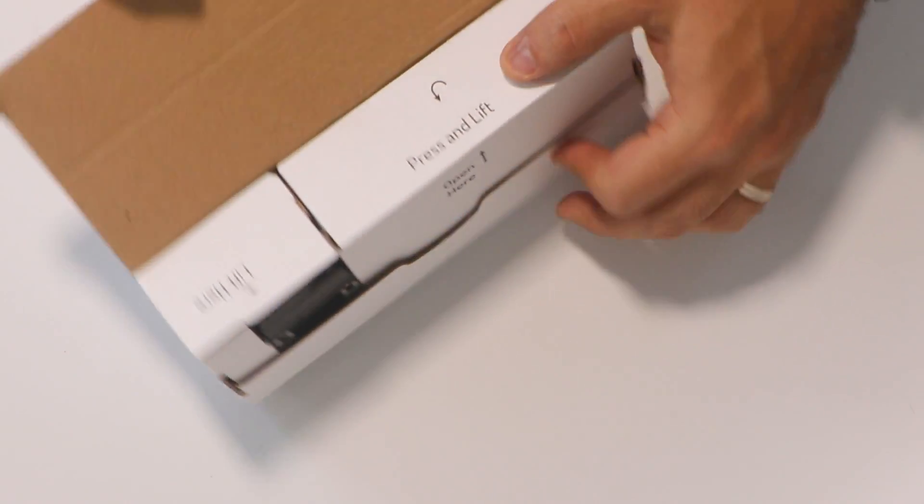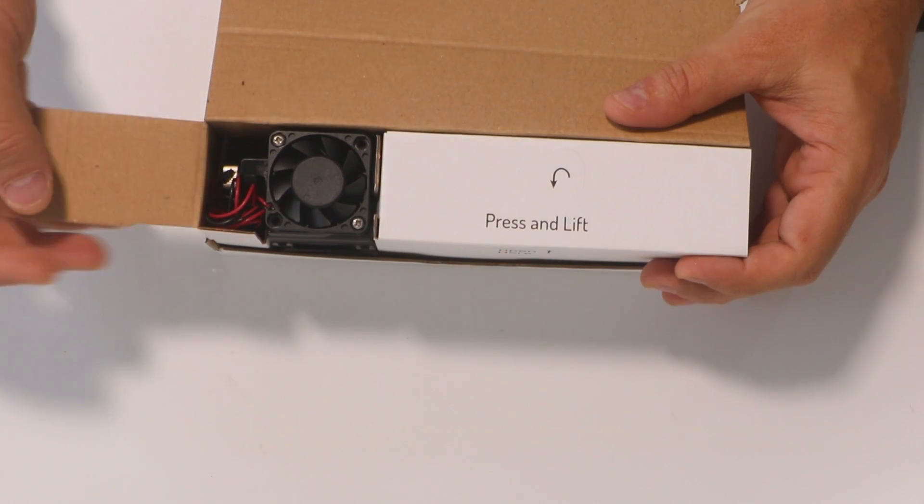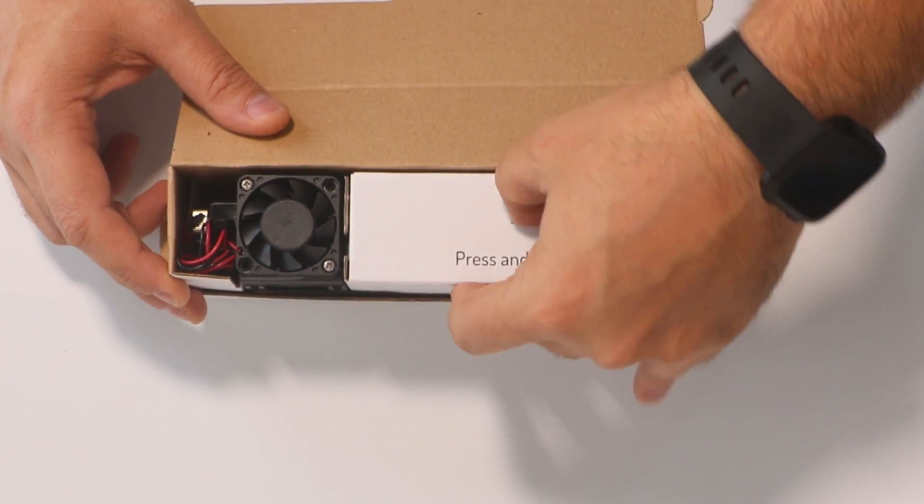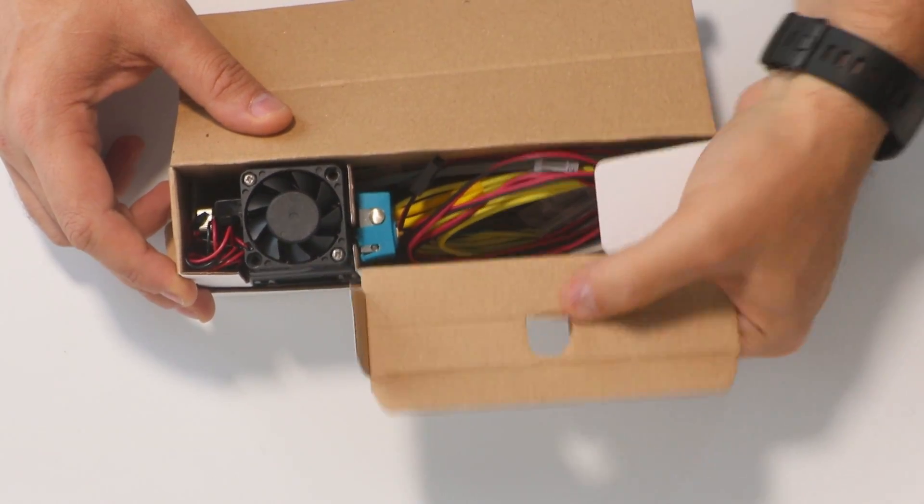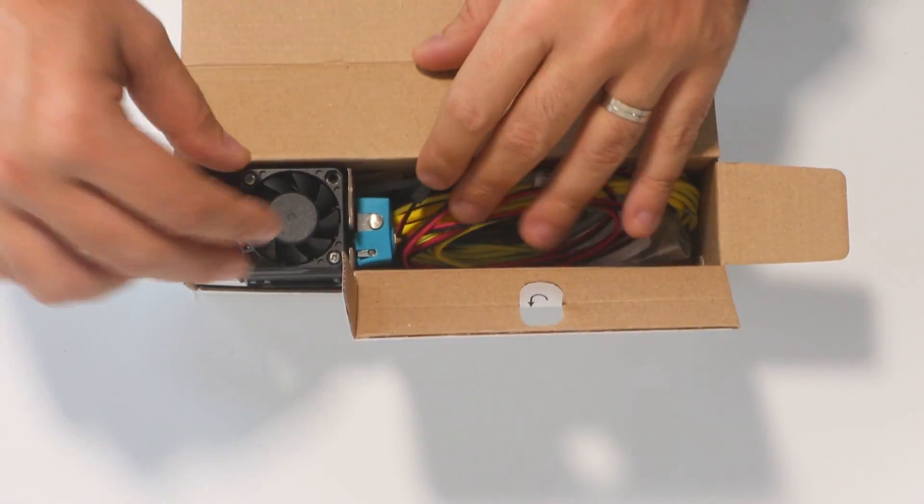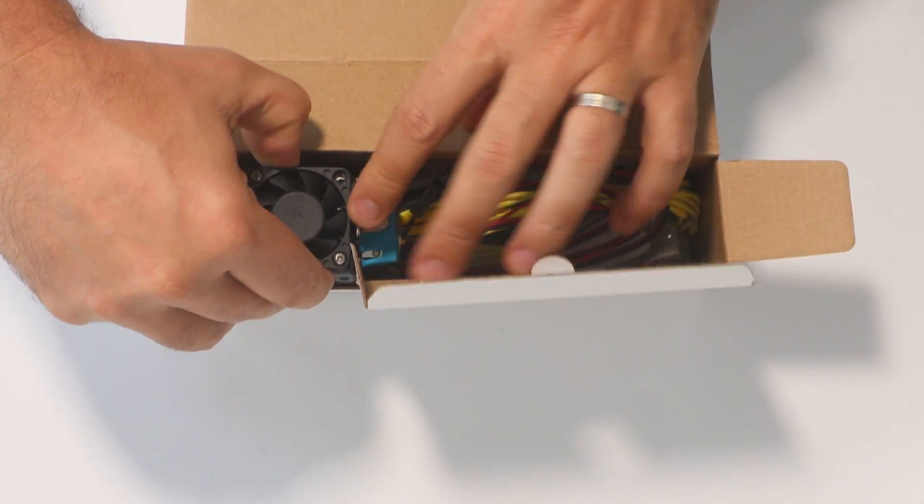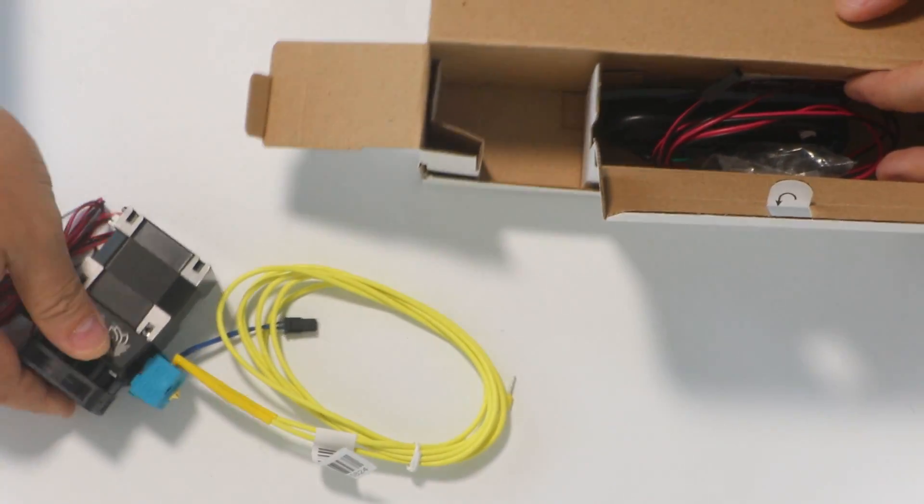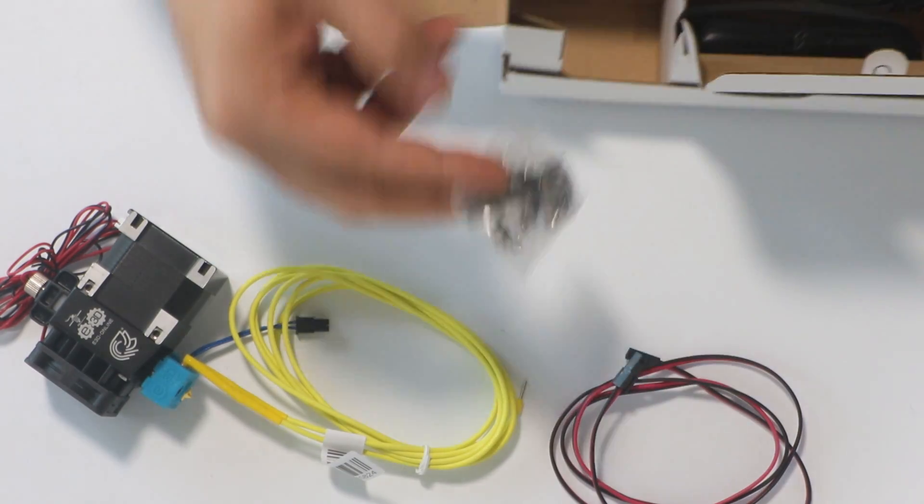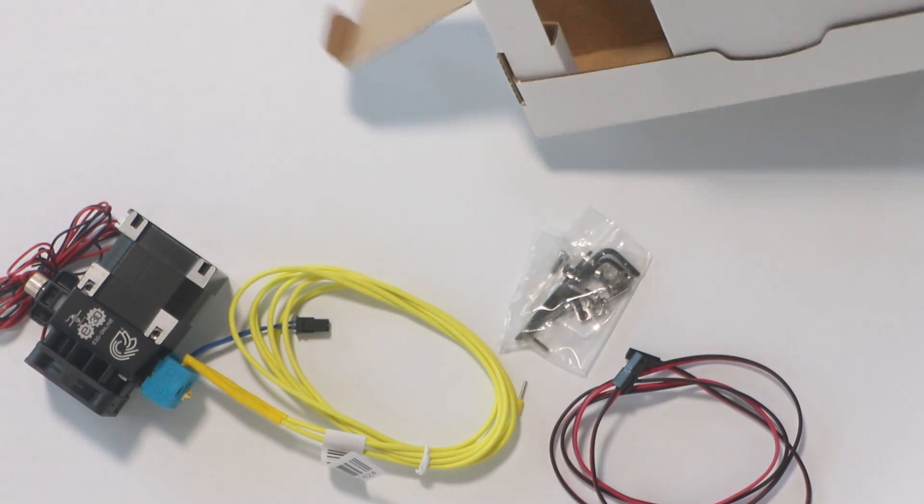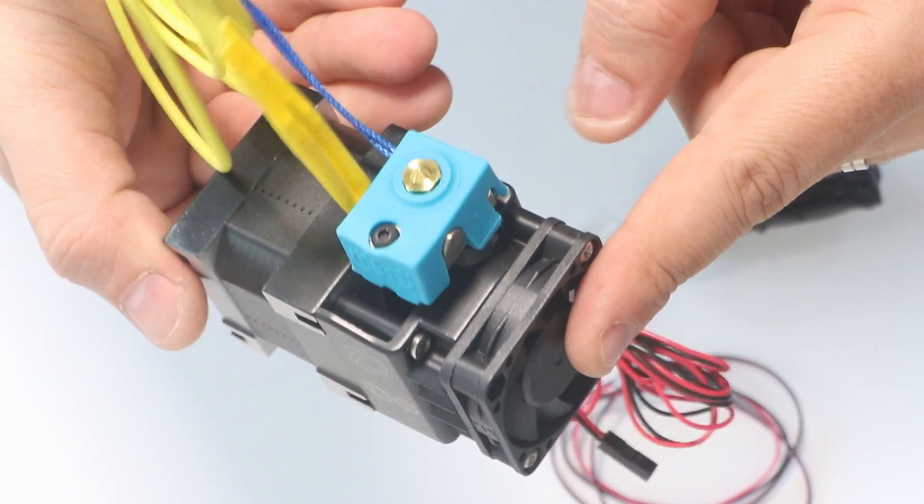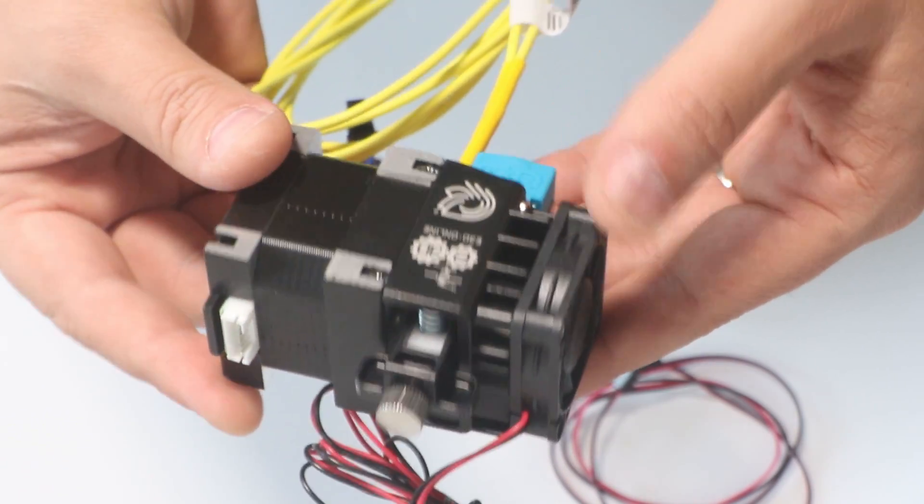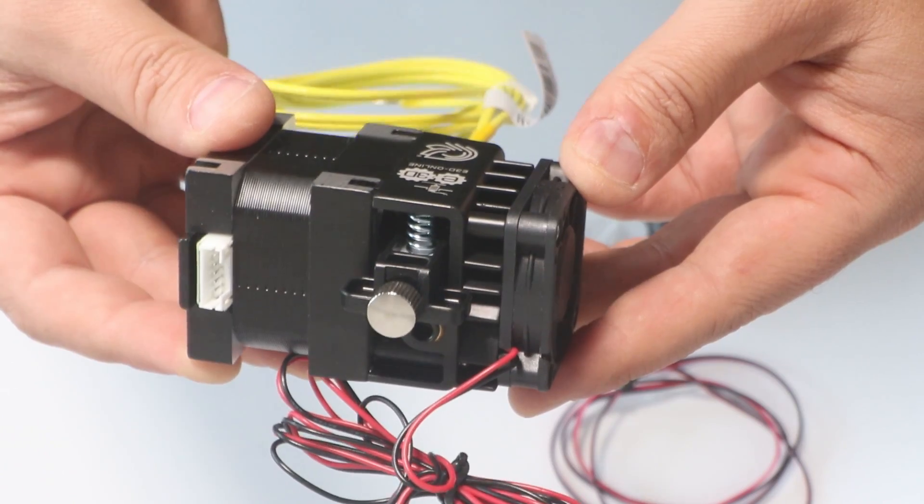There will be a few different versions of the Hemera. What I have here is the fully assembled direct kit. There's also going to be a Bowden version. Initially kits will be available and the pre-assembled ones at a later stage. The Bowden kit will be 70 pounds and the direct kit will include the hot end. That will be 90 pounds. You get everything you need inside including extra screws, tools and nuts for assembly.